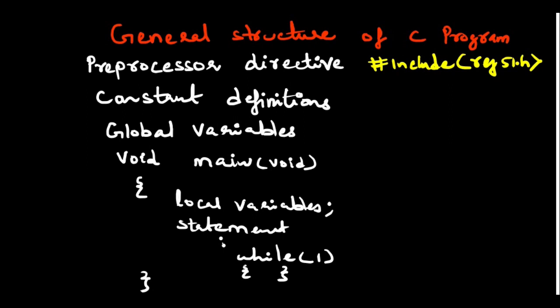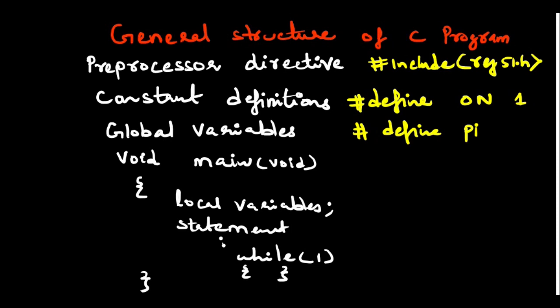These hash include statements are the preprocessor directives. Next are constant definitions — we can write it as hash define. For example, hash define ON equal to 1, meaning instead of writing 1 to turn on an LED we write ON, and it will be replaced by 1 by the compiler. Or we can write hash define PI equal to 3.142. These are the constant definitions. Then there are global variables — throughout the program we can access global variables, even inside any block of code.